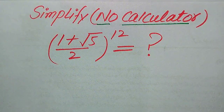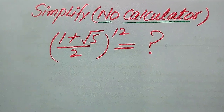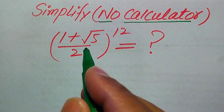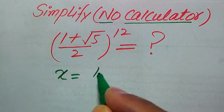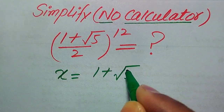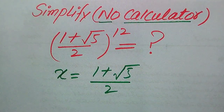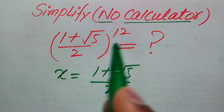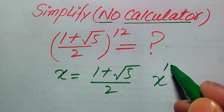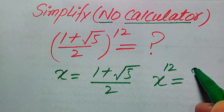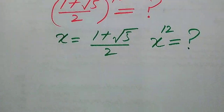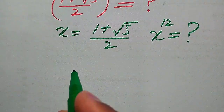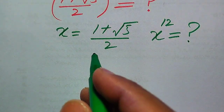Now we move toward the solution of this problem. The very first thing we are going to do is take the base of this term equal to x. So we have x equals (1 plus square root of 5) divided by 2. When we take the base equal to x, it means that we need to find the value of x to the power of 12.